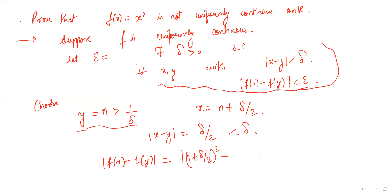f of x minus f of y equals n squared plus delta squared over 4 plus n delta minus n squared. This gets cancelled. This is basically n delta plus delta squared over 4. This is greater than 1, see, because n delta is greater than or equal to 1.